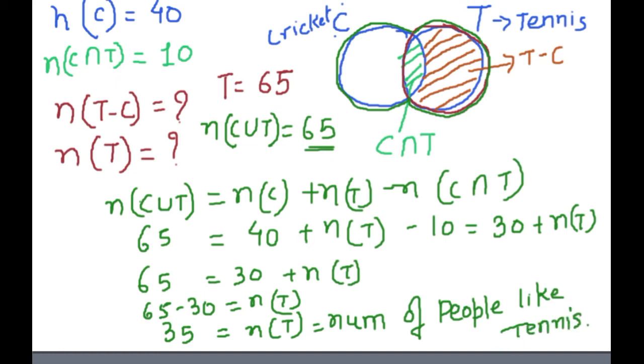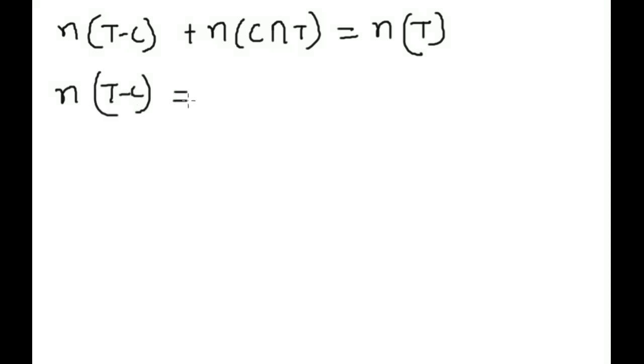Tennis. Now one part is solved, this one: number of people like tennis. Second, we need to find number of people like only tennis, not cricket. For this we have one formula: n(T minus C) plus n(C intersection T) equals n(T). We don't have T minus C, I will transfer this to this side. We have n(T) is 35, just now we got, and this is 10, so this is 25.